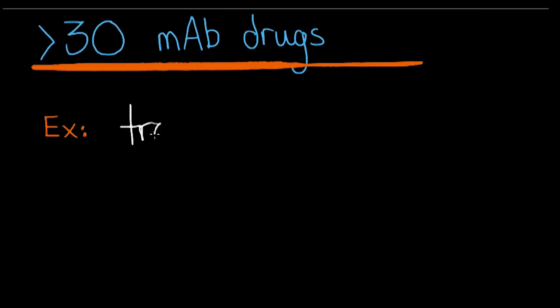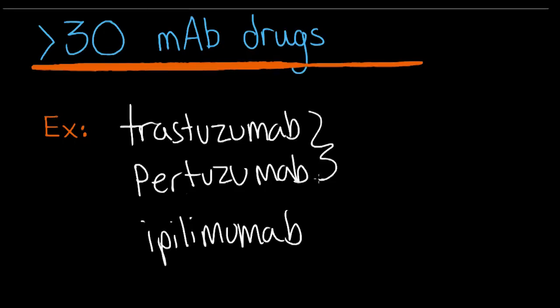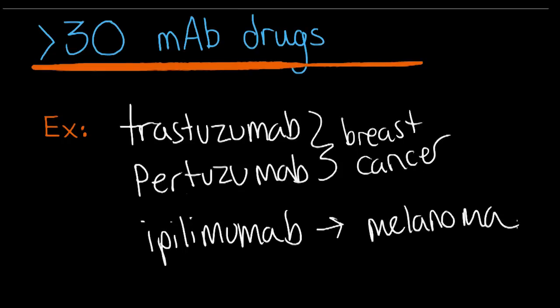Since then, over 30 monoclonal antibodies have been approved by the FDA, and many more are in clinical trials at the moment. Scientists have created other monoclonal antibody drug therapies for other diseases such as Crohn's disease, psoriasis, and even breast cancer. Monoclonal antibodies play a very important role in the development of vaccines, specifically HIV.